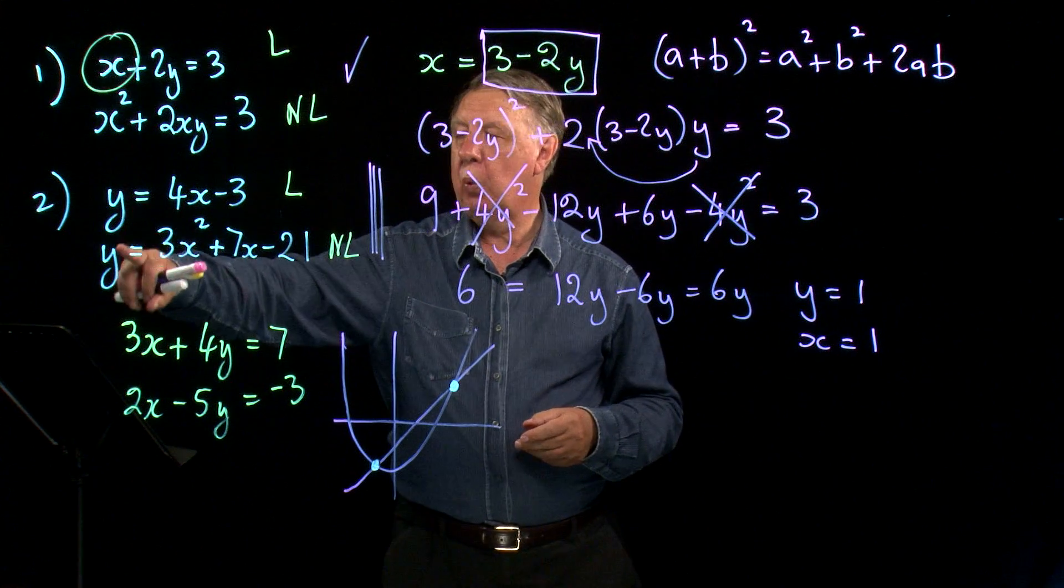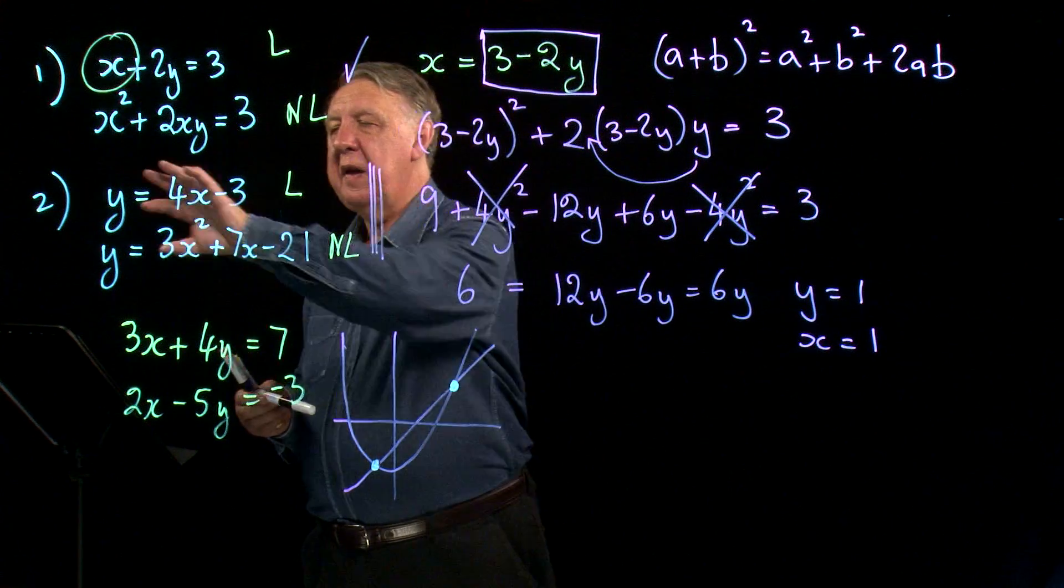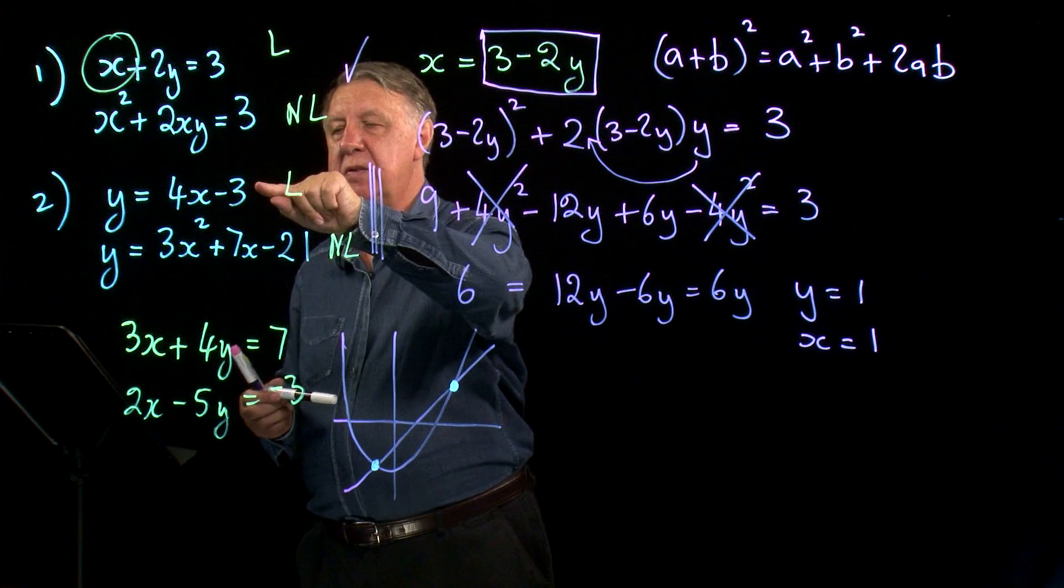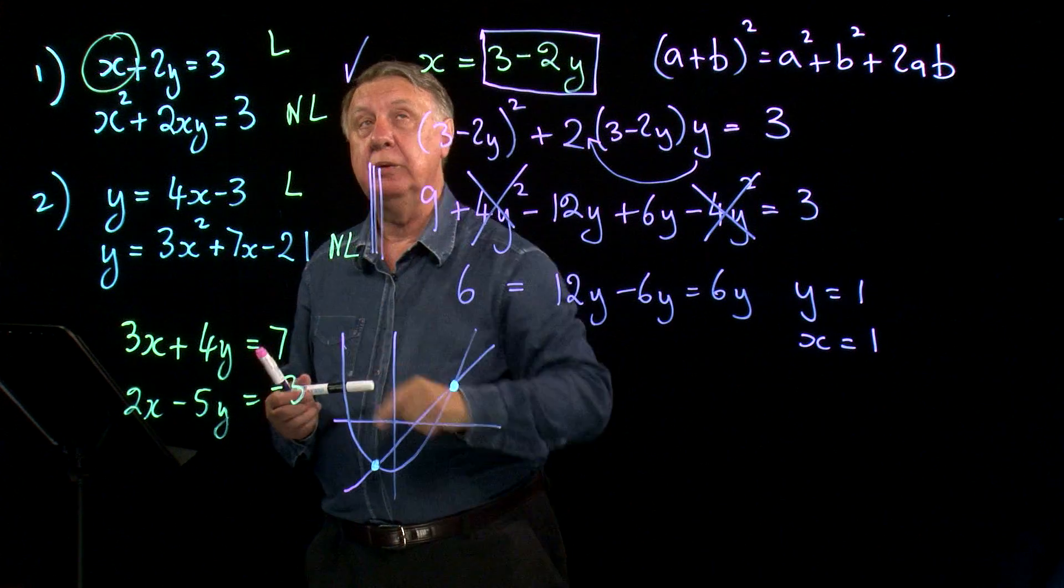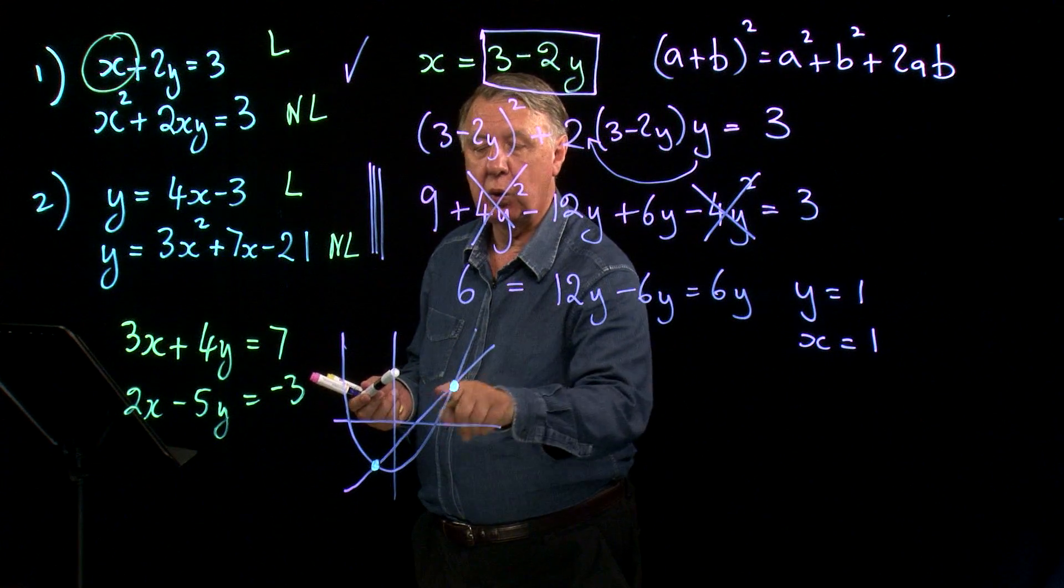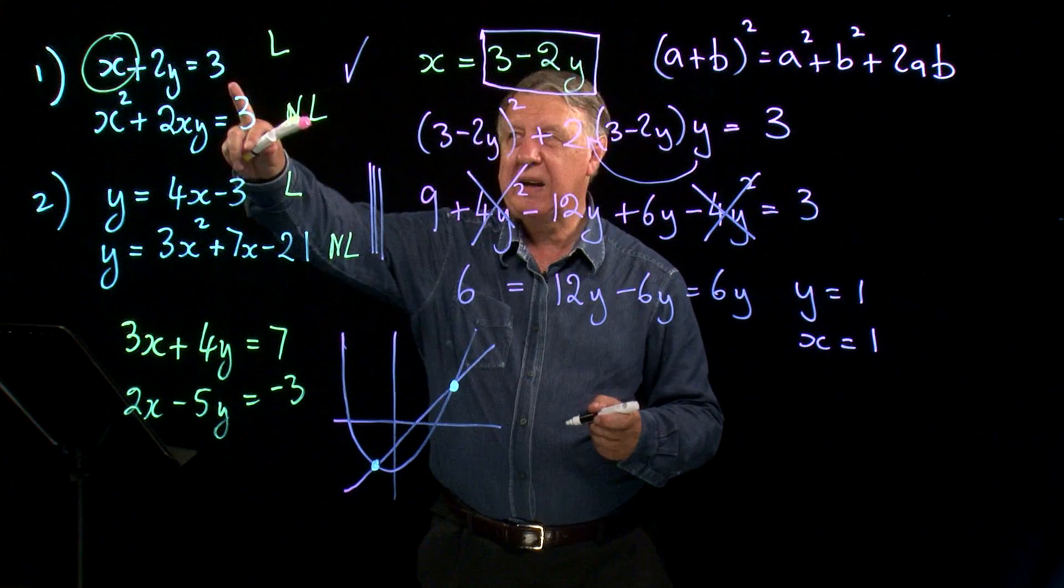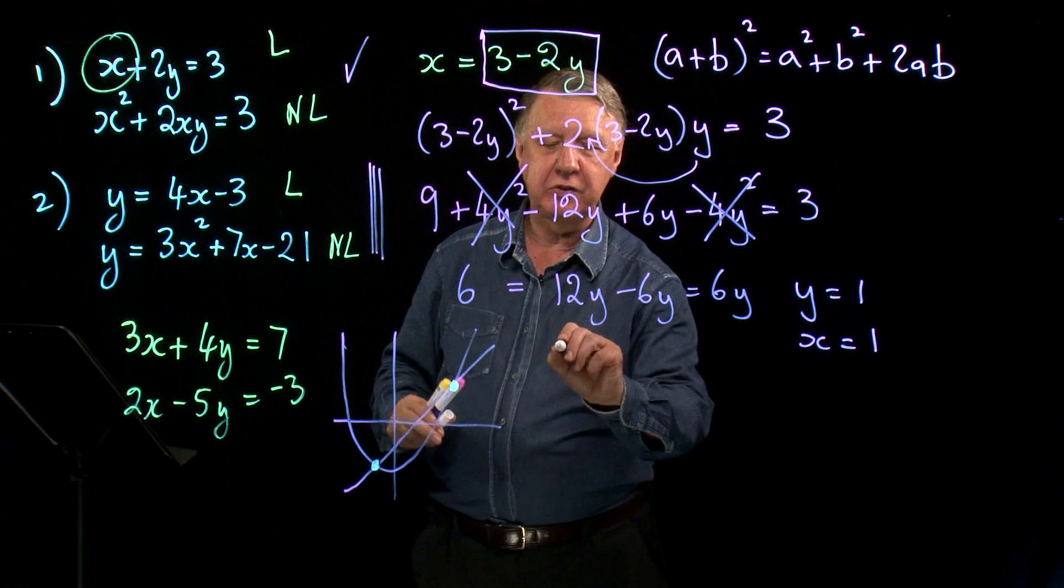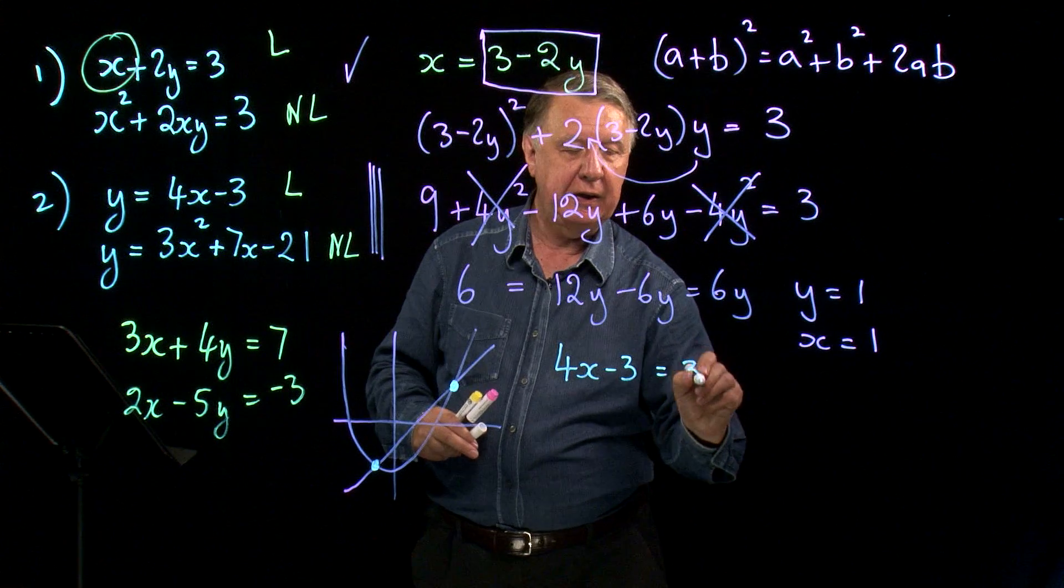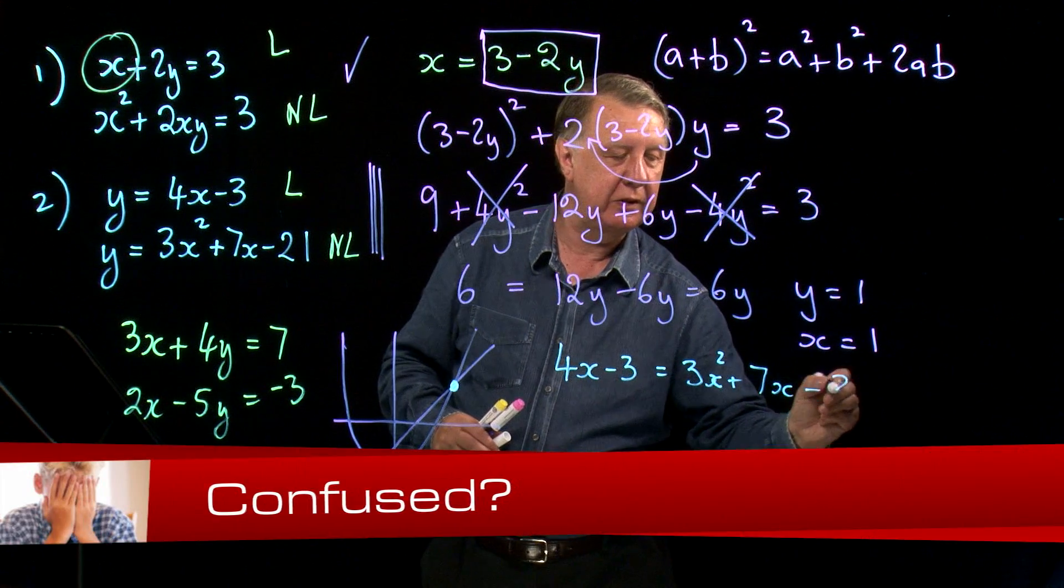Because they're both y, then you could argue that they're both equal to the same thing. So that this is actually equal to that, because they're both y. So when they meet, the y values on both of them are the same. So this in a way is a lot easier because all I've got to do is to put 4x take away 3 equal to 3x² + 7x - 21.